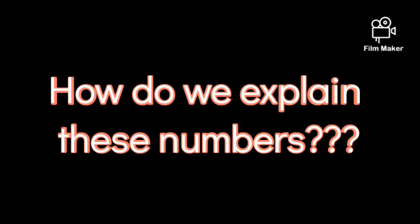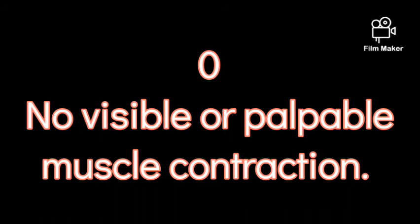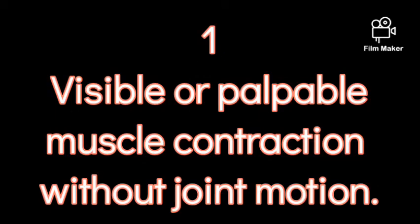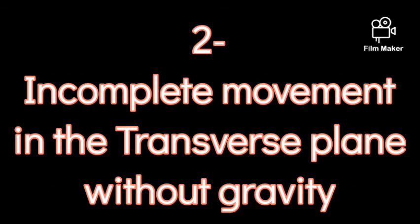Zero represents no visible or palpable muscle contraction during assessment. The value of one represents only visible or palpable muscle contraction without joint motion during assessment. Two minus represents incomplete movements performed in the transverse plane without gravity.